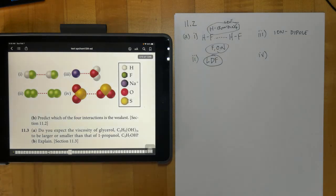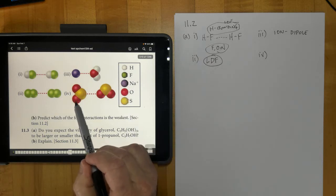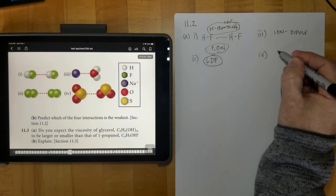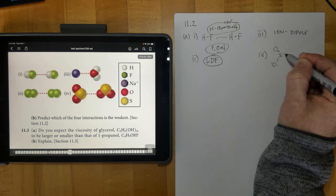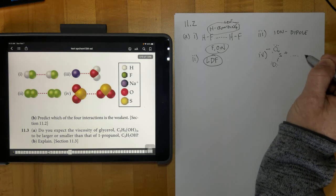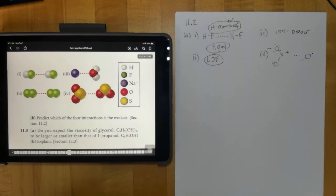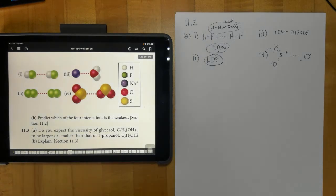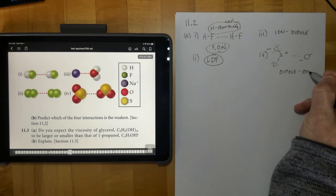And then in the last one we've got a sulfur dioxide, SO2, one of these guys right here. We're going to have a polar molecule with more negative over here, more positive here, attracted to the more negative part of the oxygen atom in the other SO2. And so this would be a dipole-dipole interaction.